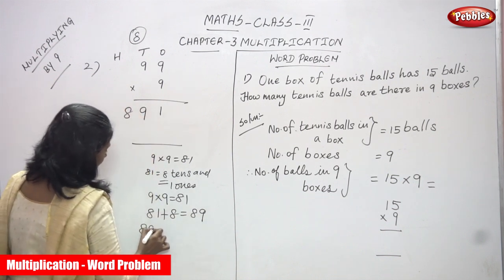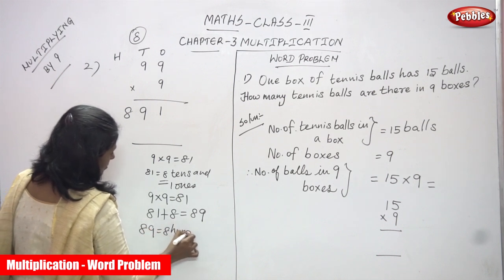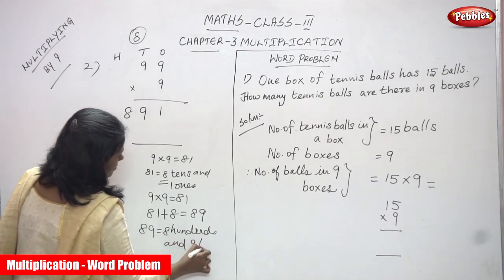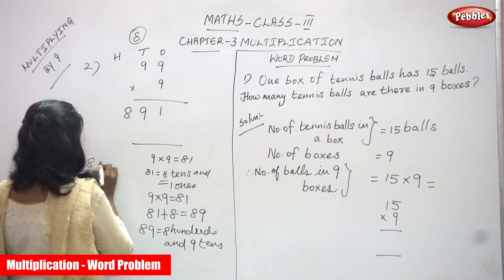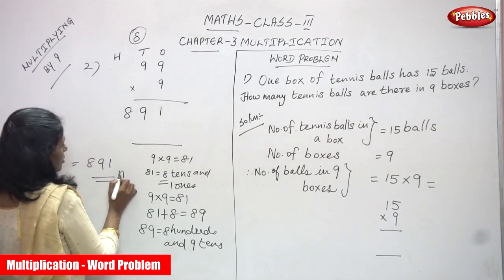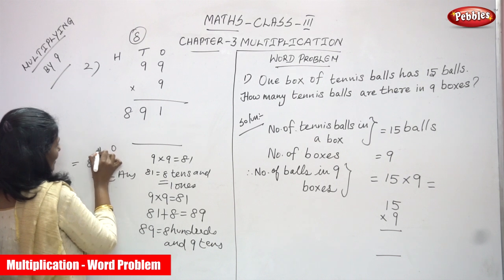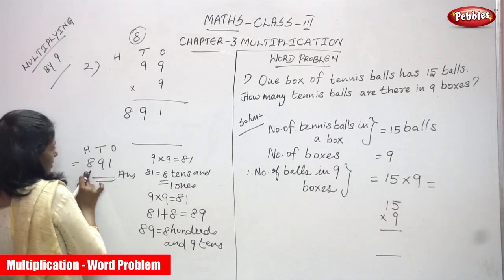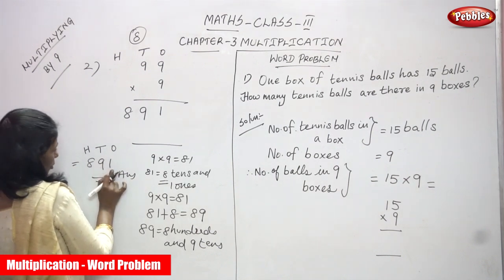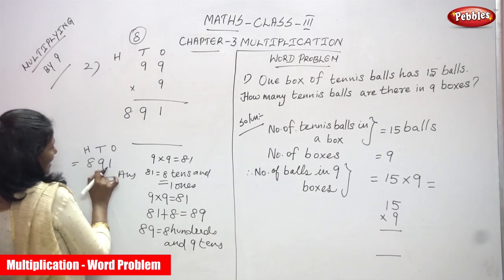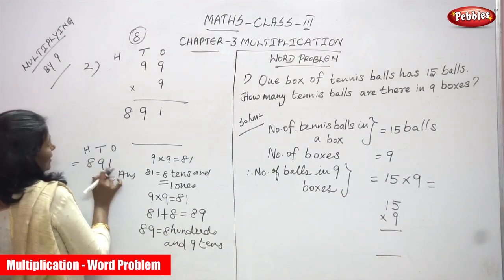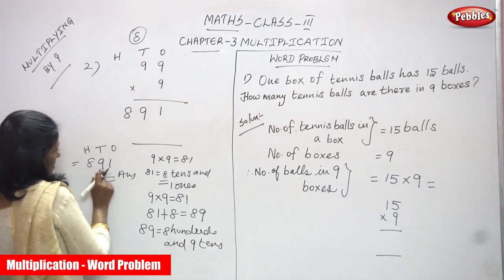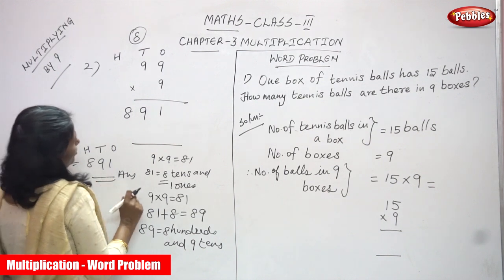So this 89 can be called as 8 hundreds and 9 tens. The answer is 8, 9, and 1 — that is 891. This is 1s, 10s, and 100s. So 8 hundreds, 9 tens, and 1 one. The answer is 891. This is the right answer for the question.